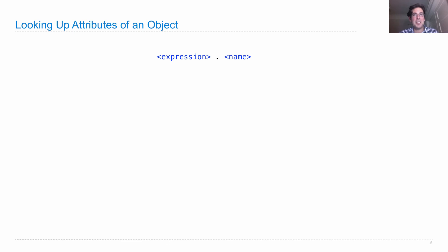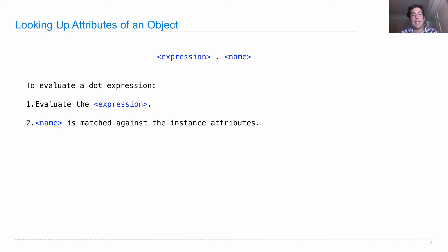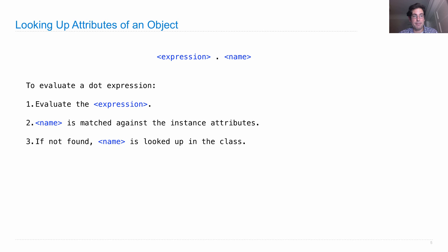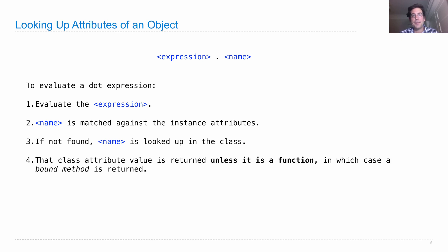Let's go through all the details of how to look up a name on an object using a dot expression. To evaluate a dot expression, we first evaluate the expression on the left of the dot — that gives us the object. Next we check if this name matches one of the instance attributes of that object. If it does, that's the value of the dot expression. If it's not found in the instance, the name is looked up in the class — that's how all instances of a class have something in common, since they all share the same class. Then that class attribute value is returned.